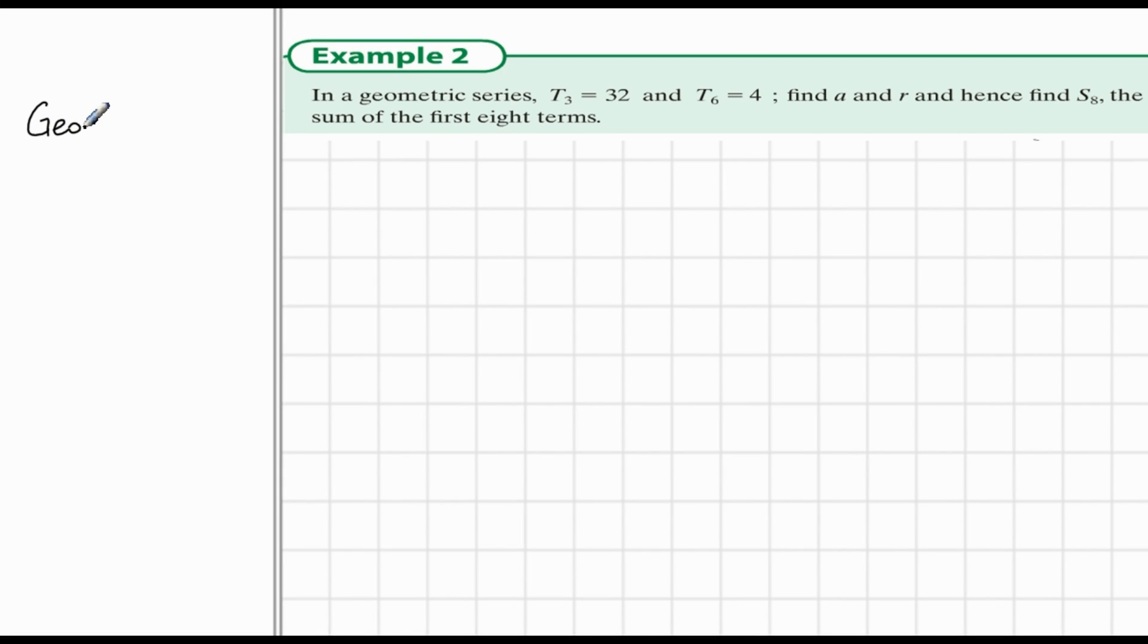In example 2, we have another geometric series. We're given that term 3 is equal to 32 and term 6 is equal to 4. We're to find what a is, what r is, the common ratio, and we're also to sum the first eight terms.